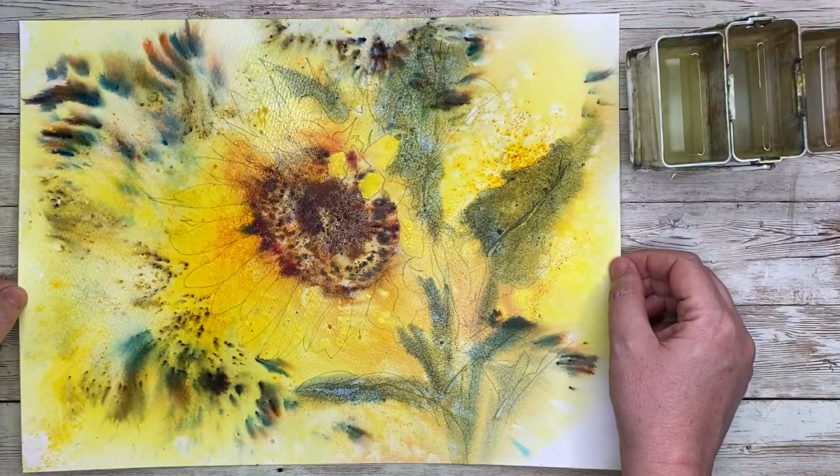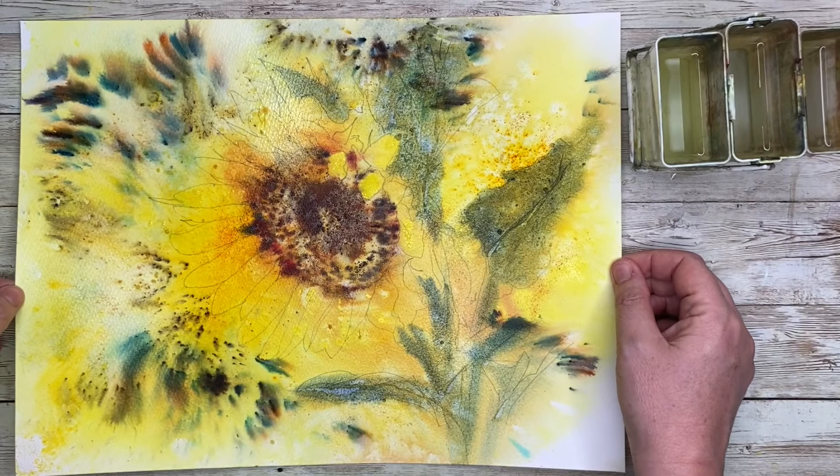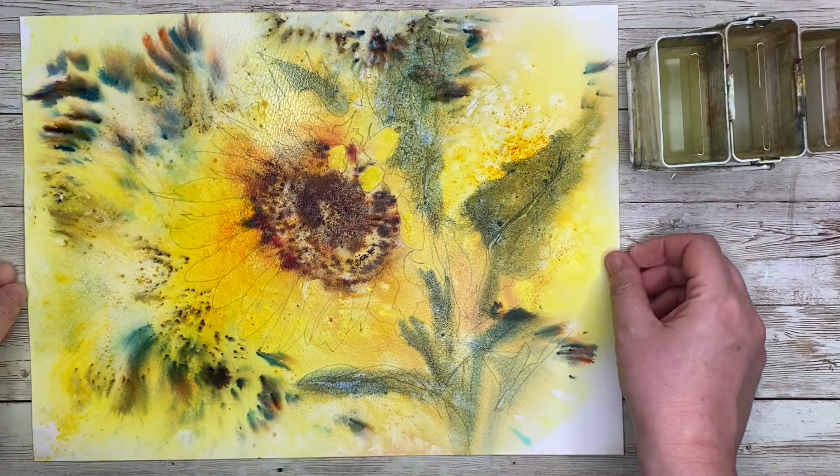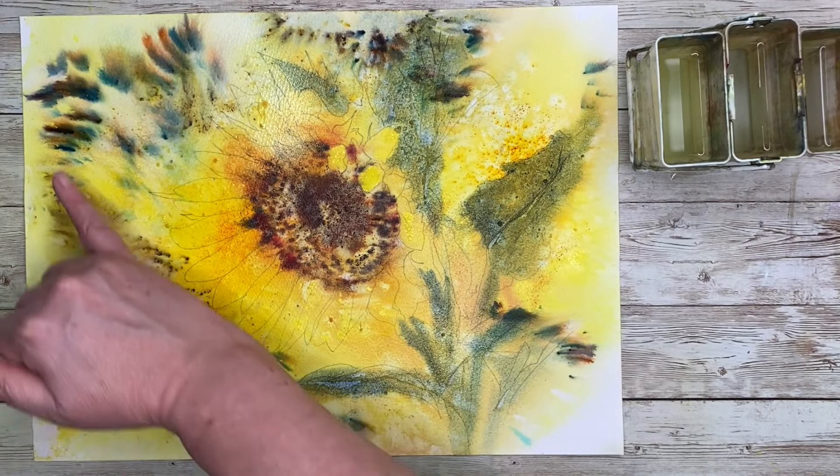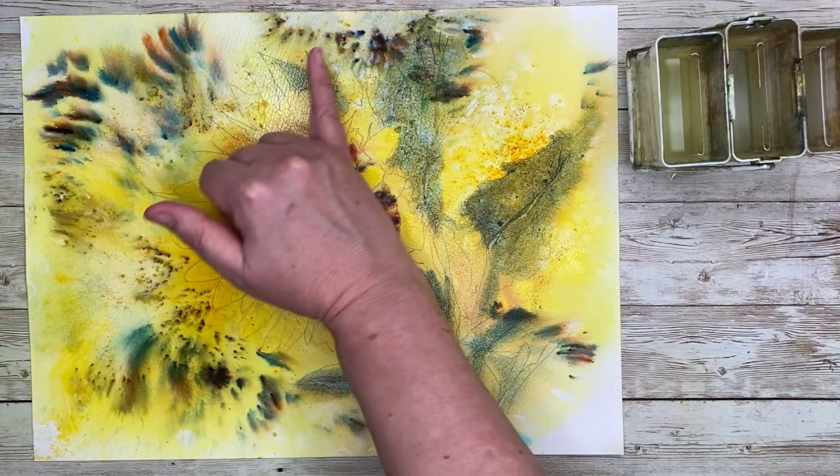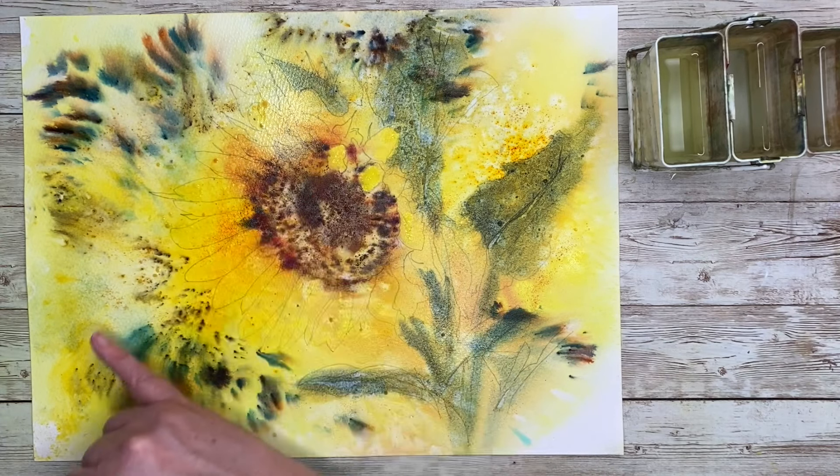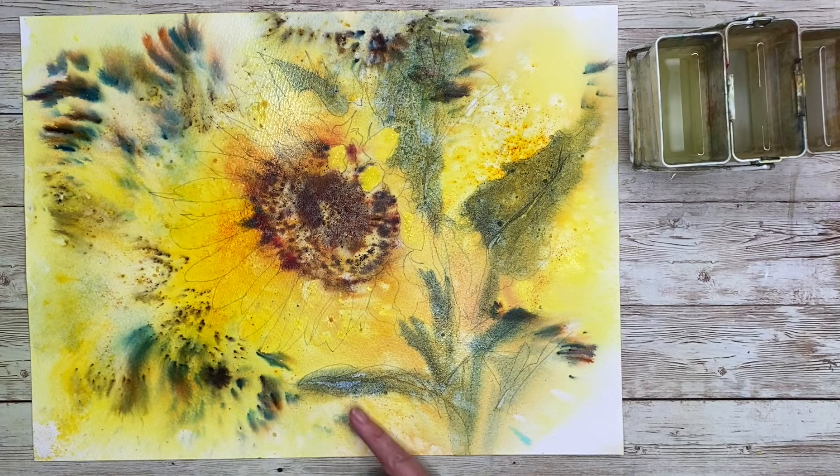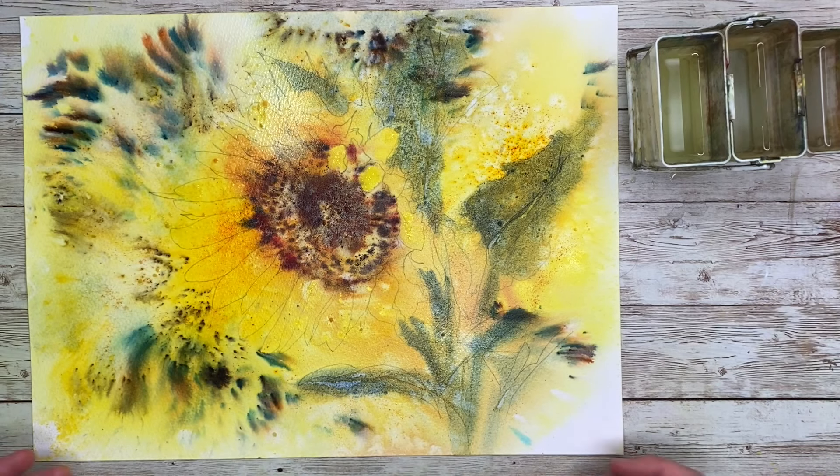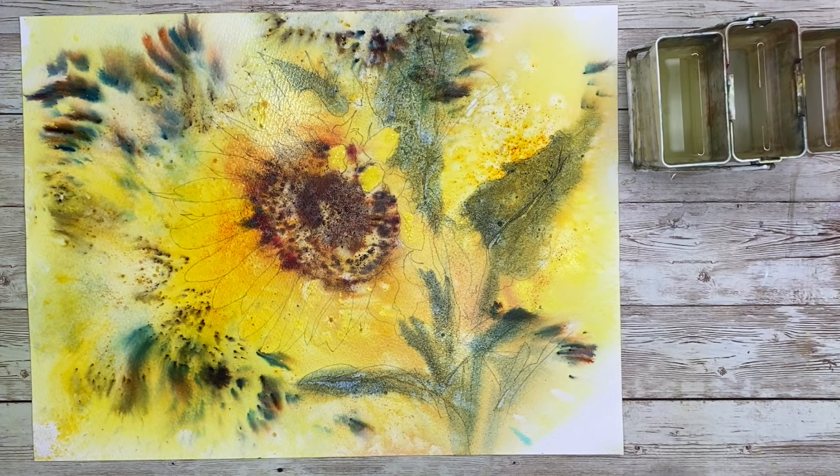This is an example of where I use Brusho in the background. And this is a tutorial that I'm working on for the Patreon membership. And as you can see, I've used some of that lovely moss green Brusho in the background there. And it's really created some wonderful textures. If you're interested in the Patreon membership, just click the link in the top right hand corner, and it will give you more details.